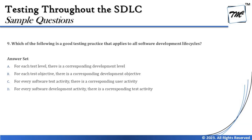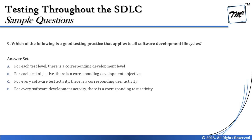Option C says for every software test activity there is a corresponding user activity. There is nothing called a user activity among the four standard practices applicable to any development model, so we can rule it out. Option D says for every software development activity there is a corresponding testing activity — and that is exactly what we have been talking about.